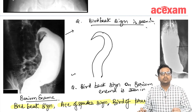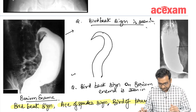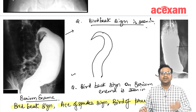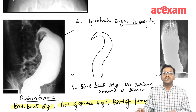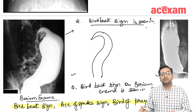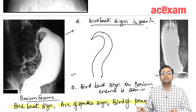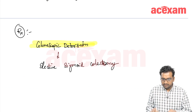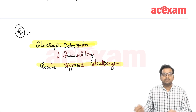Since it is a closed loop obstruction, once diagnosed with x-ray or barium enema, the treatment is initially colonoscopic detorsion. After detorsion, bowel edema will reduce, and then we perform elective sigmoid colectomy. We do not wait conservatively even after detorsion because there is a possibility of recurrence. So the treatment of choice is colonoscopic detorsion followed by elective sigmoid colectomy.